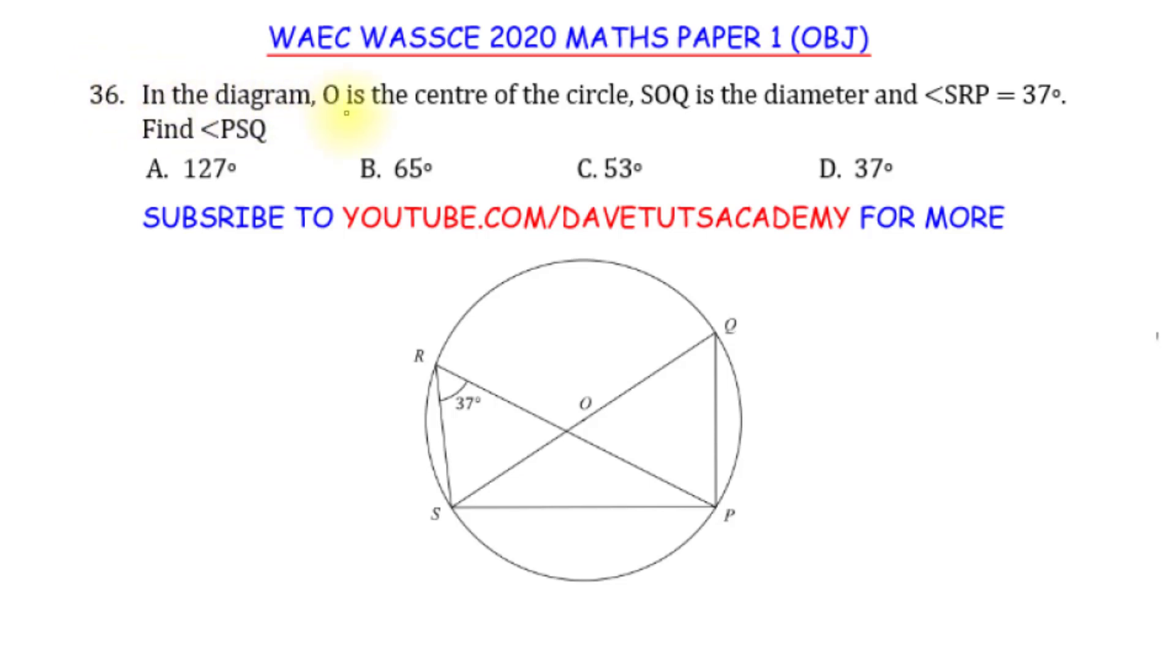In the diagram, O is the center of the circle, so O here is the center of the circle. You need to know that, so that we will identify that line RP is not passing through the center. Then SOQ is the diameter, SOQ, that's the diameter, and angle SRP is 37 degrees, SRP, so this angle here is 37 degrees. We have to find angle PSQ, so PSQ, this is the angle we have to find, this angle here. Let's call it theta, that's what we have to find. Now, how do we go about solving this particular type of question?